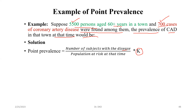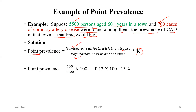We then multiply by K, which represents a constant value. If we are talking about percentage, we multiply by 100. If out of 1000, we multiply by 1000, or 10,000, or per lakh — it depends on how you are going to interpret the value. Since the numerator and denominator are already given, we just put in the values: 700 divided by 5500, multiplied by 100.